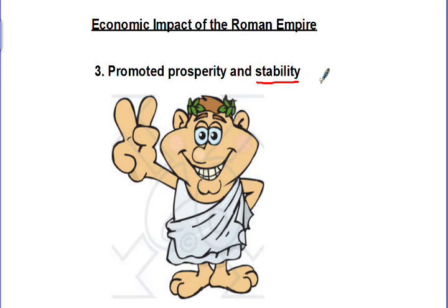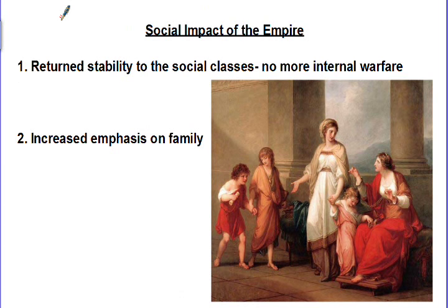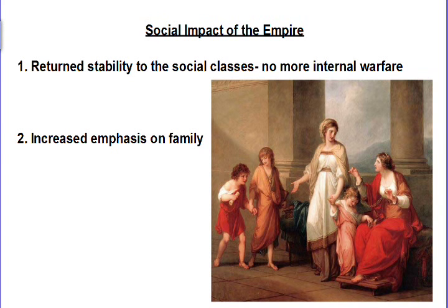The Pax Romana — you've got to think peace and stability. Now, the social impact of the Roman Empire at its height: when we talk about the Pax Romana, this is the Roman Empire at its greatest point. They returned stability to the social classes. Before, during the fall of the Republic, we had rich versus poor, senators versus tribunal assemblies, patricians versus plebeians. Now we have more stability in the social classes — no more civil wars, no more internal warfare. There was also an increased emphasis on family values.